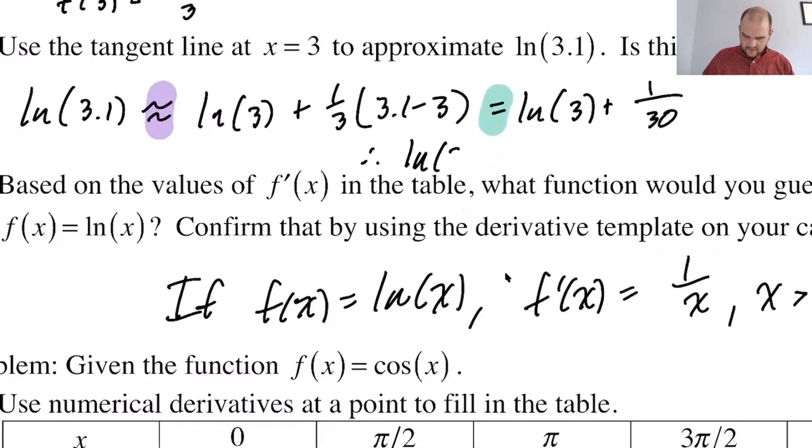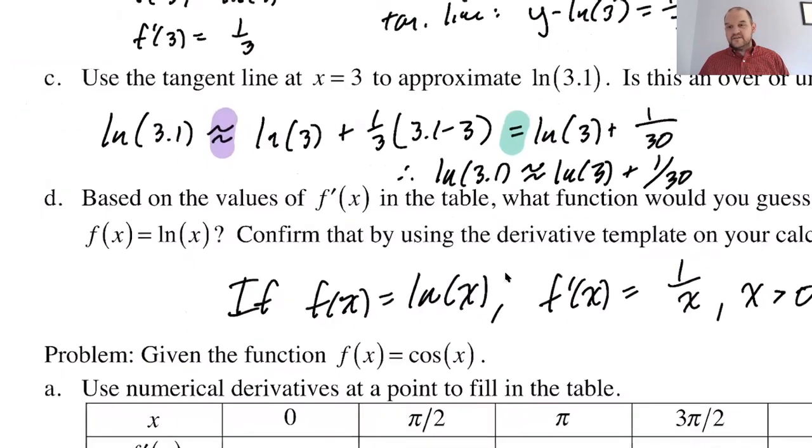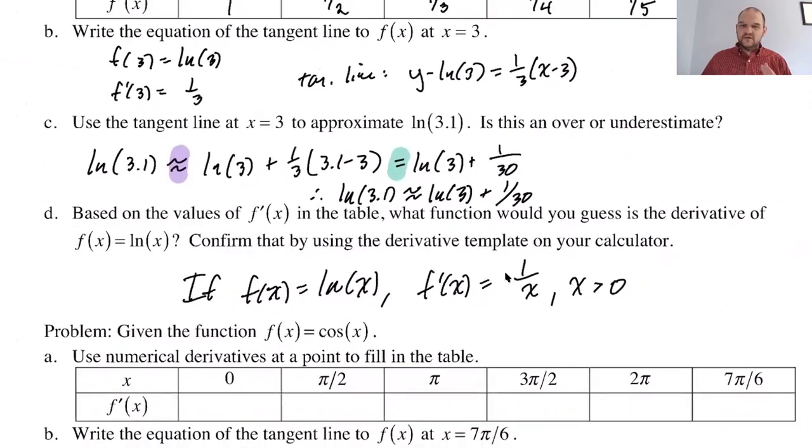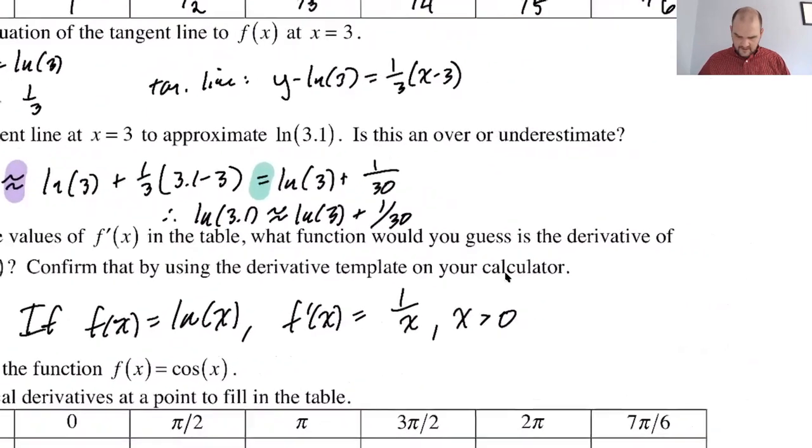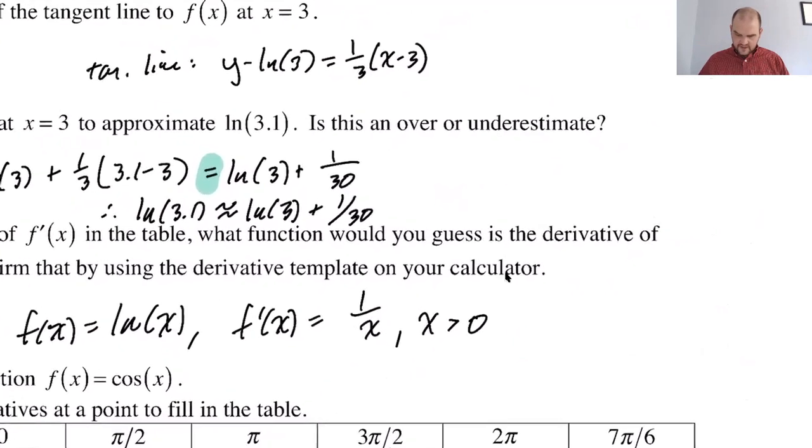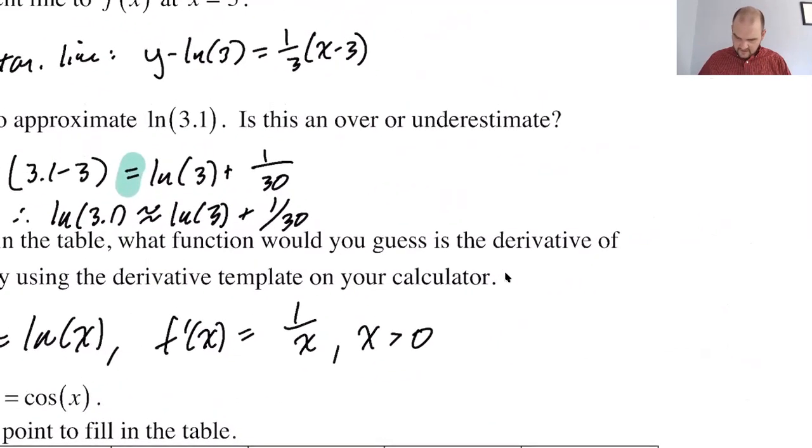What they'll do is at the end, they'll finalize their answer and say therefore the natural log of 3.1 is approximately the natural log of 3 plus 1 over 30. I don't ordinarily do that; I'm just doing that because some people really don't like that inequality type situation there. Let's see, is this an over or underestimate?